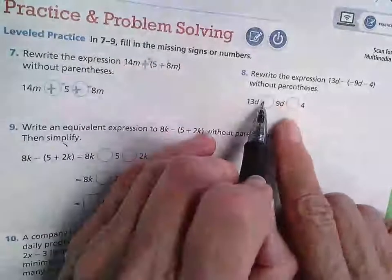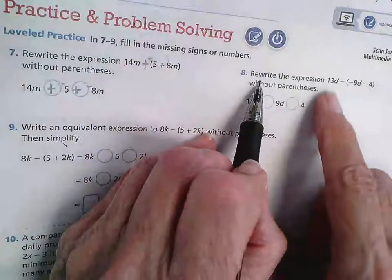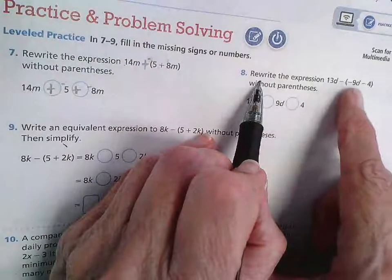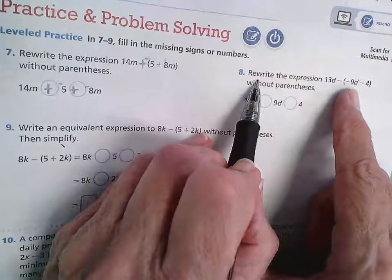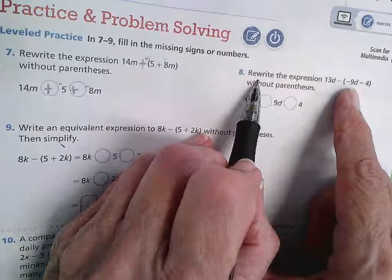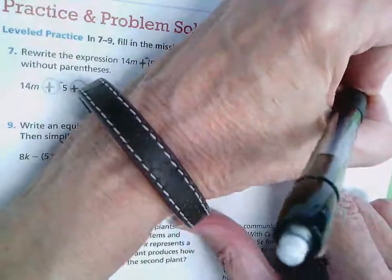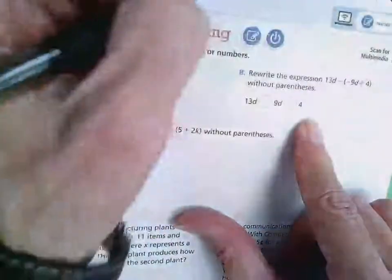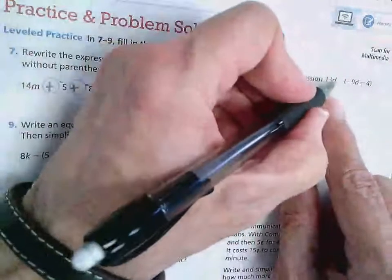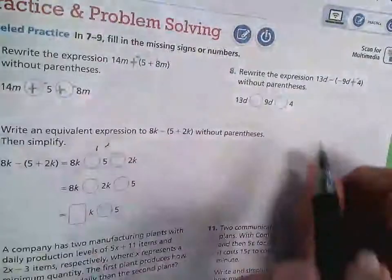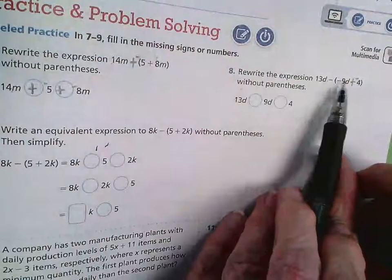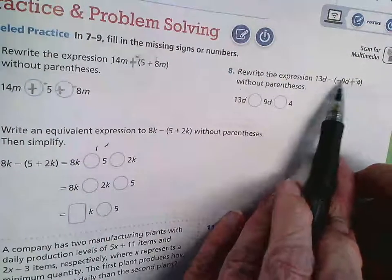Number 8, rewrite the expression 13d minus in parentheses negative 9d minus 4 without parentheses. So I can change this to a plus negative. And what that means is this sign right here is going to change all of these signs inside to their opposites.